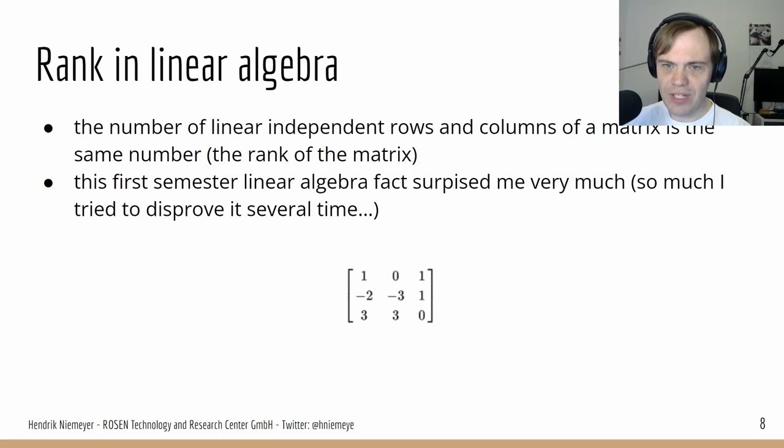What I really find interesting: rank in linear algebra. The number of linear independent rows and columns of a matrix is the same number, the rank of the matrix. Here below you see a matrix of rank 2. You have now several seconds to calculate that in your head. This first semester linear algebra fact surprised me very much, so much I didn't believe it at first and tried to disprove it several times. Of course, it's impossible to disprove because it's a fact which can be proven, but for me it was very surprising.